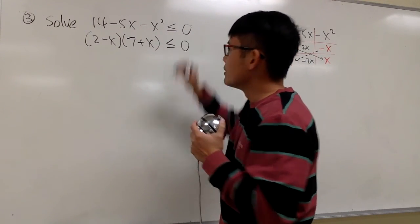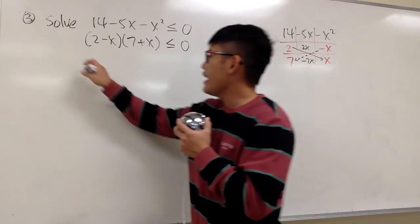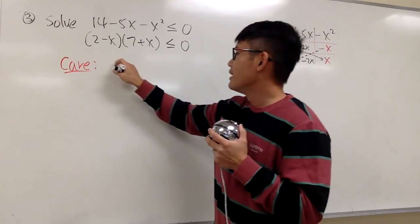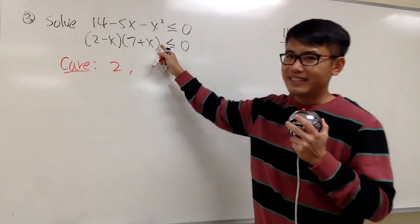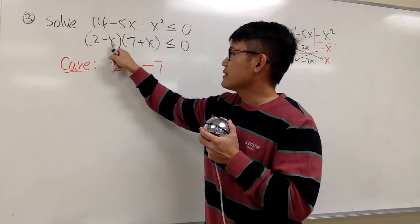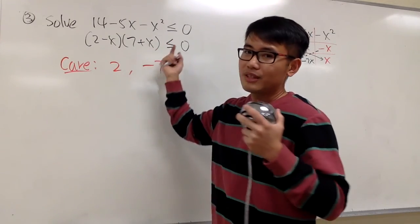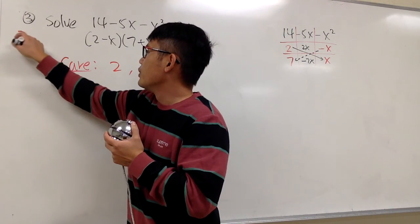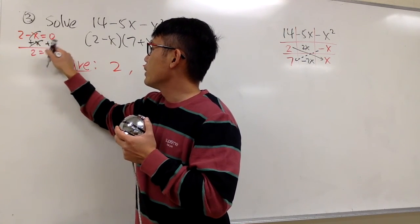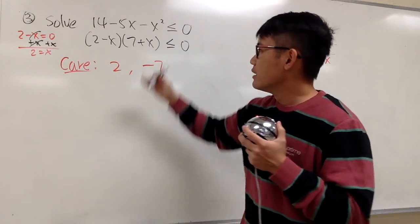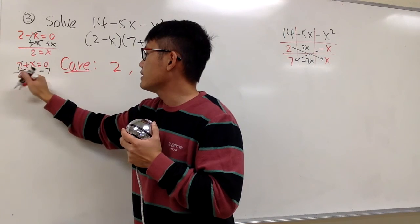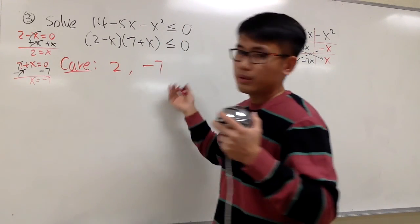And this is still less than or equal to 0. Now, what are the numbers that we care about? For the first parentheses, I care about positive 2. From the second parentheses, negative 7. If you plug in 2, the whole thing will be 0 — that's good. If you plug in negative 7, this will be 0 — that's good. Setting 2 minus x equal to 0, add x to both sides: 2 equals x, so x equals 2. For the second one, 7 plus x equals 0, subtract 7: x equals negative 7. Those are the two numbers we care about.